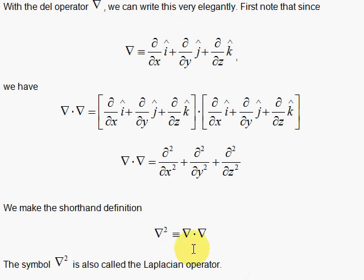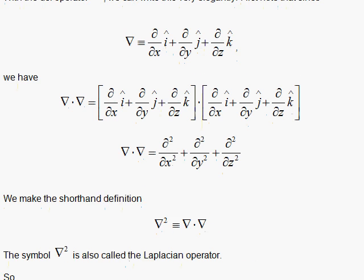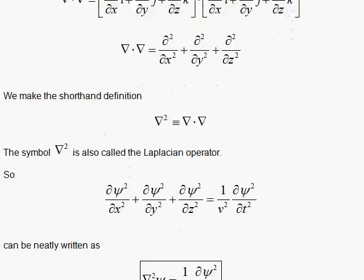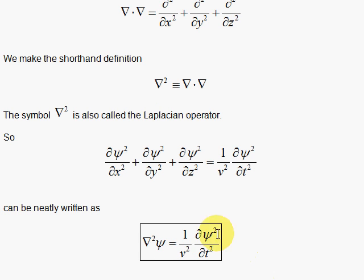Del dot del can be written like this, del squared. And using that, our wave equation takes on the most beautiful form. Del squared of psi is 1 over v squared times the second derivative of psi with respect to t. And remember, the velocity goes with the t, so the dimensions come out right, and we have the dimensions of distance squared in each case in the denominator.